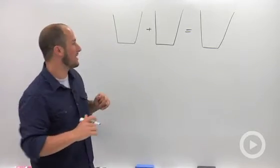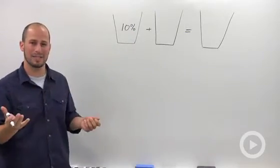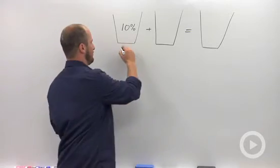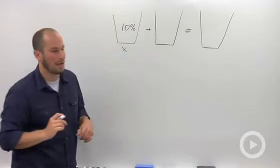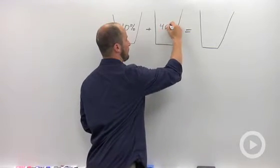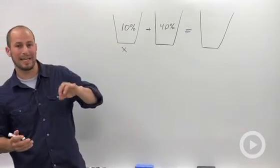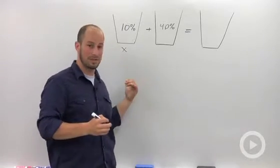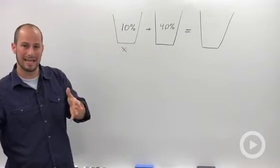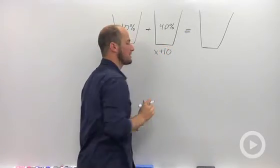So our first drink is 10% caffeine. And it never tells us how large it is. So if we don't know how large something is we can assign it a variable x. Our second drink is 40% caffeine. And we don't know how big that is either but we do know it is 10 ounces larger than the first. So if the first was 5 ounces the second would be 15. We're just adding 10 onto that first number. So this just turns out to be x plus 10.